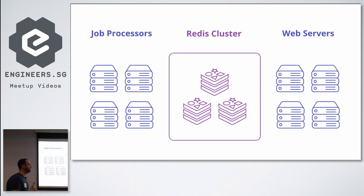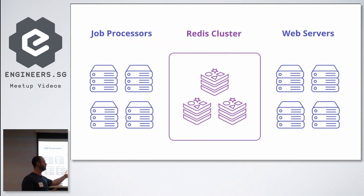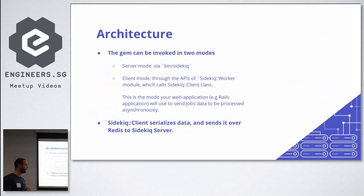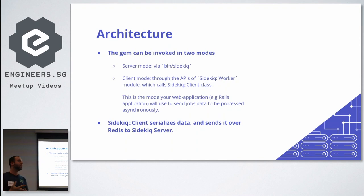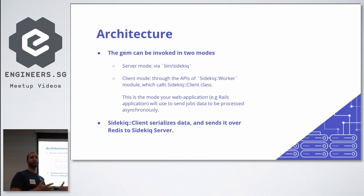Sidekiq is simply a job server and job processor. From your web server you can push data into Redis, and Sidekiq servers will pick up the data and process it. Sidekiq as a gem runs in two modes: it can run in a server mode and a client mode. If you run it within Rails it runs in client mode; if you run it through the bin Sidekiq executable, it runs in server mode. How you configure and start the process differs a lot between these modes.